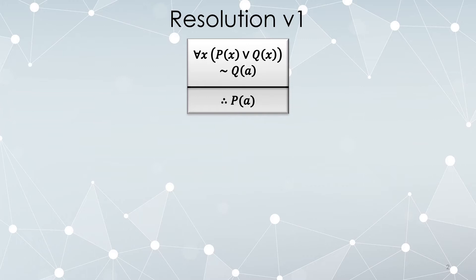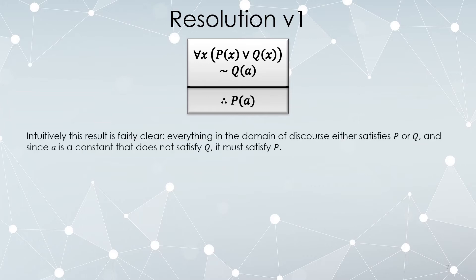It says, for any x, either P of x or Q of x is true. A is a particular element for which Q of A is false. Therefore, A is a particular element for which P of A must be true. That's really all it's saying, and intuitively it makes a good amount of sense.